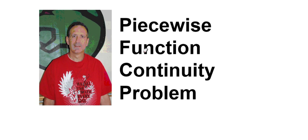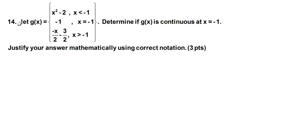We had a calculus test last Friday and this is one of the problems. This is a piecewise function continuity problem. From problem 14, let g of x equal x squared minus 2 when x is less than negative 1, negative 1 when x equals negative 1, and negative x over 2 minus 3 halves when x is greater than negative 1. Determine if g of x is continuous at x equals negative 1. It says here to justify your answer mathematically using correct notation, and this is where some students have trouble — so that's a really big purpose of this video lesson today.